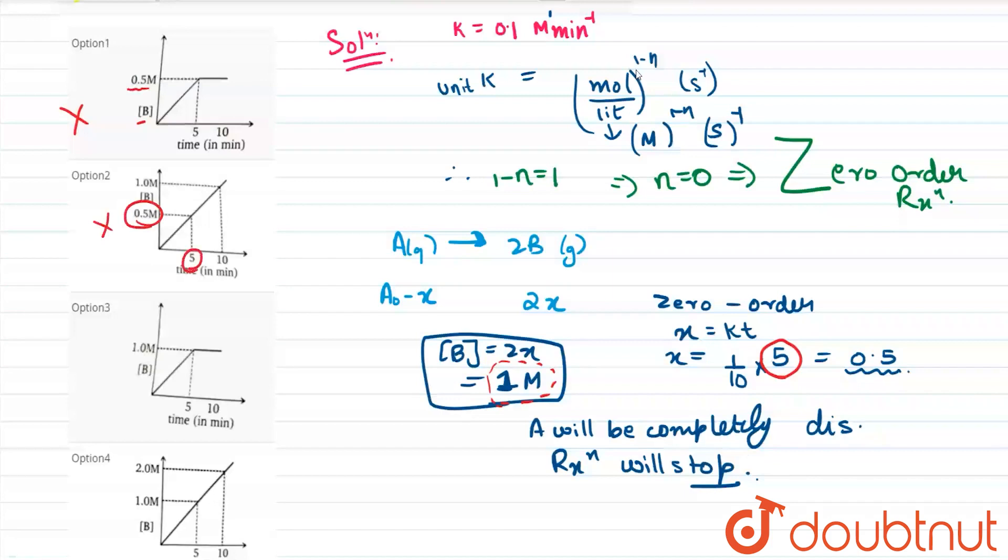Coming to option number 3 it is saying that at time t equal to 5 minutes it is 1 molar and moreover after that there is no reaction happening, no reaction. So this is the correct option.